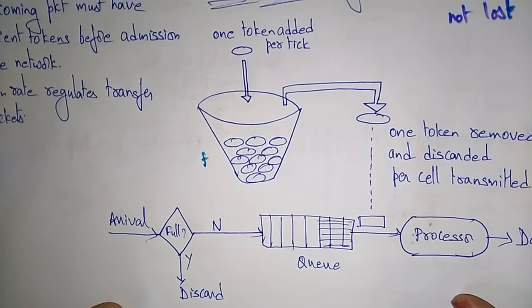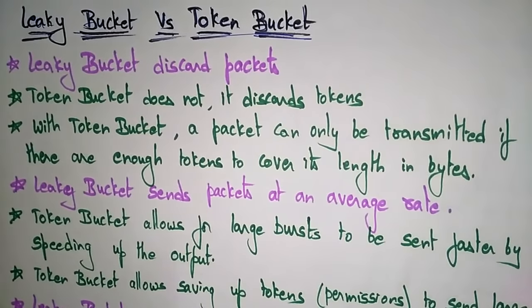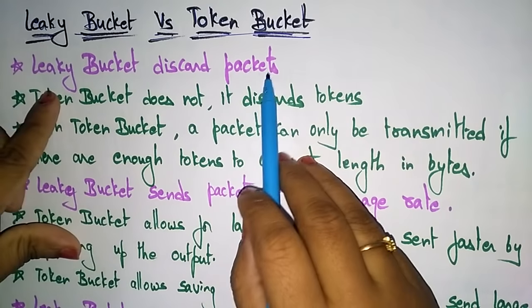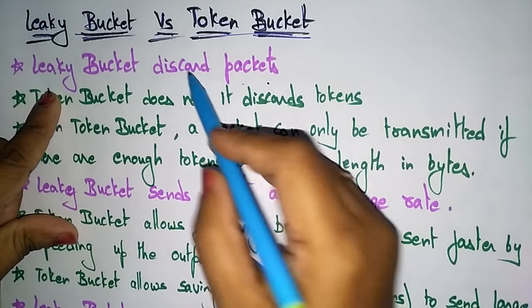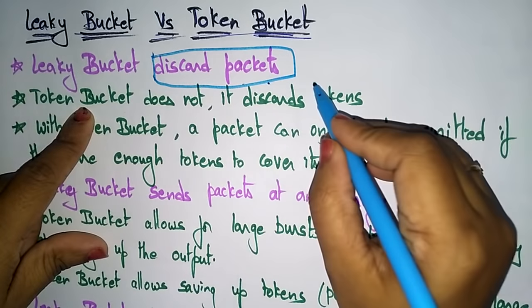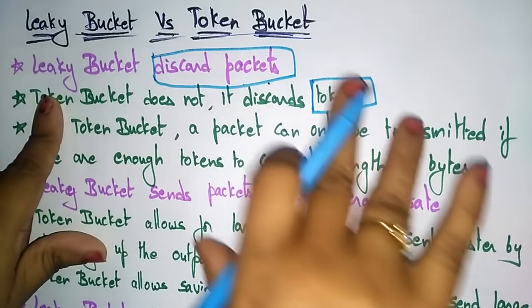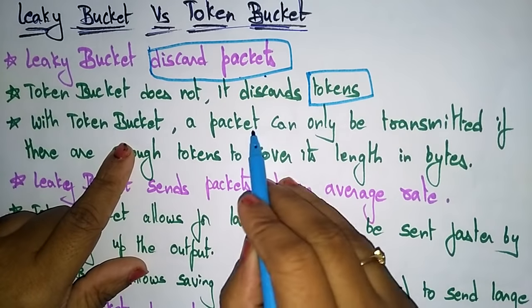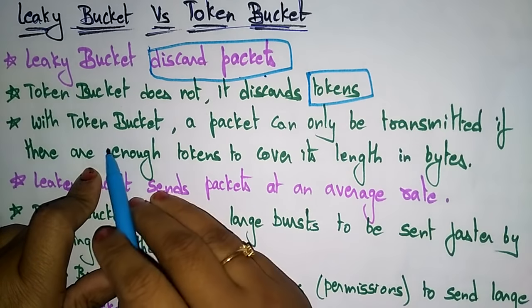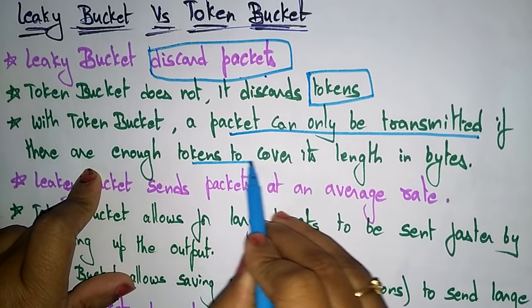Let's see the difference between the leaky bucket and the token bucket so you get a clear idea. The leaky bucket discards packets, whereas the token bucket does not discard packets — it discards only tokens. Remember: the token bucket discards only tokens, but the leaky bucket discards complete packets. With the token bucket, a packet can only be transmitted if there are enough tokens to cover its length in bytes.